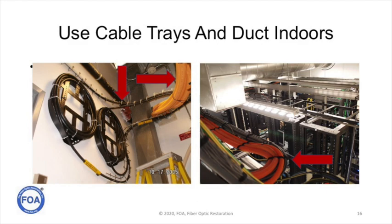Many of the bend radius violations you see in premises cabling are patch cords on patch panels and racks that are hanging in all sorts of directions. Because a lot of the cabling in premises is hidden above ceilings or above equipment, it's hard to see. Here are a couple of examples of how to use cable trays and interduct indoors to protect cable. A lot of users use interduct in premises cabling applications because there are a lot of people in a building working above the ceiling, and protecting fiber optic cable is easier if it's inside a duct that's bright orange and obvious to anybody working near it.